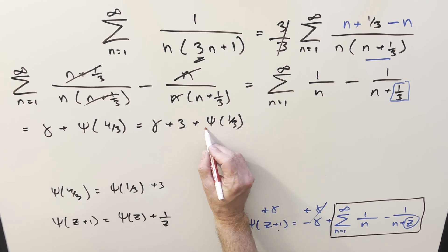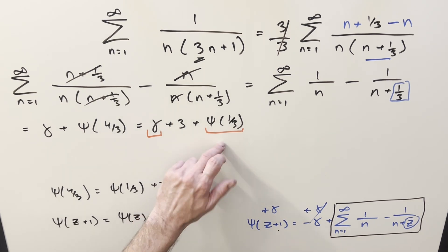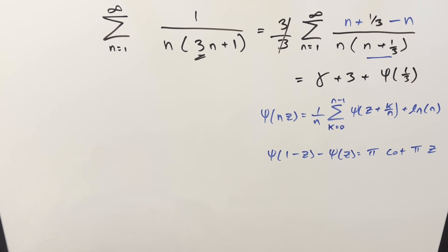So put this back in here, and we've got Euler-Mascheroni constant plus 3 plus digamma of 1 third. But now how can I reduce this to something nicer, and how can we get rid of the Euler-Mascheroni constant in this? Let's look at a couple of formulas that can allow us to get like a numeric value for this right here.